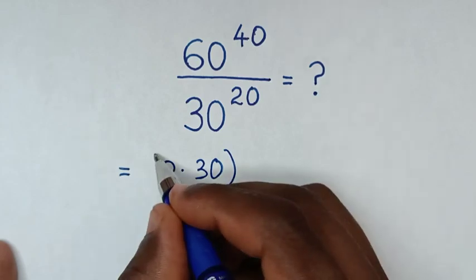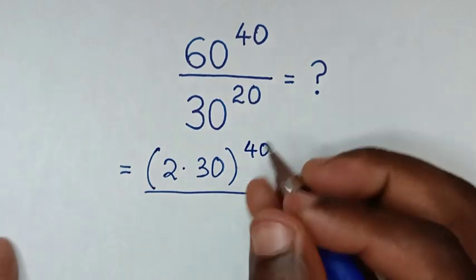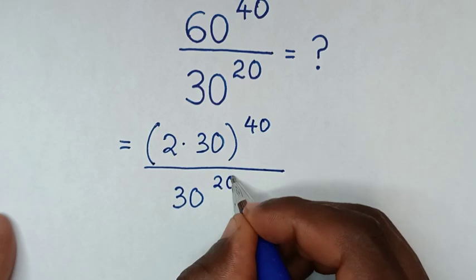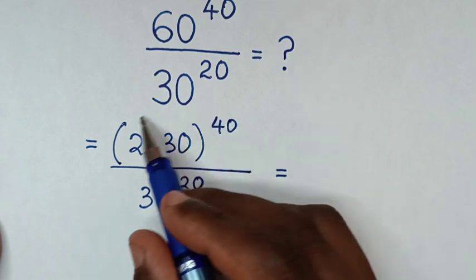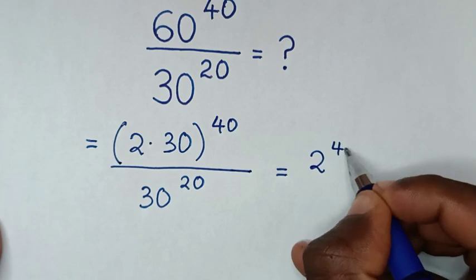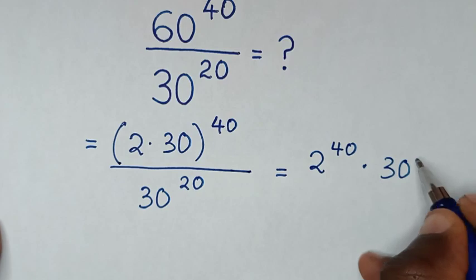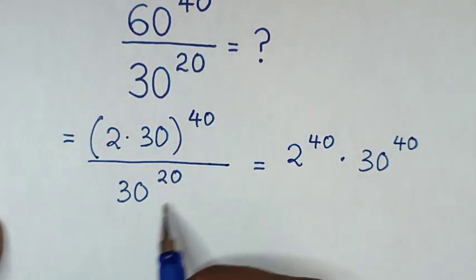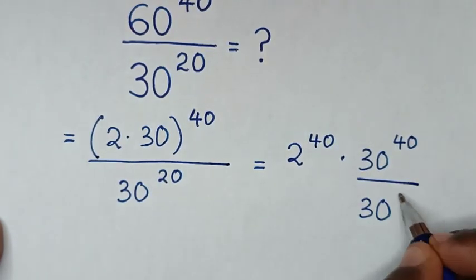Then bracket power of 40 over the exponent in the denominator which is 30 power of 20. We take this power of 40 inside the bracket, so it will be 2 power of 40 times 30 power of 40, then we divide by 30 power of 20.